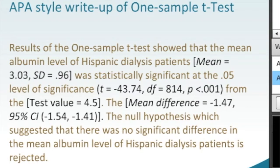This is where we actually have our t-distribution: t equaled minus 43.47 with 814 degrees of freedom, p was less than 0.001 from the test value — which for a one-sample t-test is 4.5.